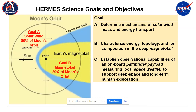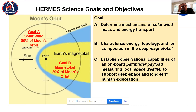These are our three major goals. On the left is an illustration of the orbit of the Moon around the Earth — we will spend about 80% of the time out in the solar wind and about 20% of the time in the terrestrial magnetotail. Gateway's orbit sort of drives our science goals to some extent.